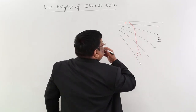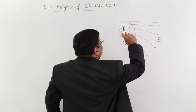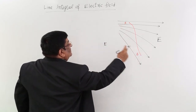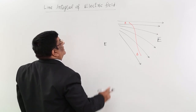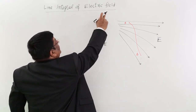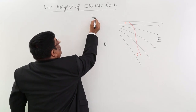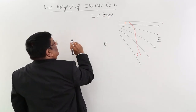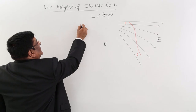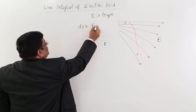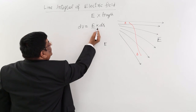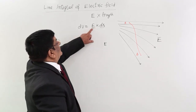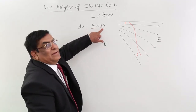At every point along this red line, we want to find E multiplied by the length, but E is changing. For the line integral of electric field, I want E multiplied by the length of the path. Because we have just studied that dV is equal to E into dr — electric field multiplied by the length of the path gives potential difference.